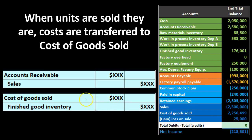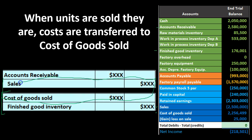When a sale is made, we increase accounts receivable and increase sales revenue. At the same time, finished goods inventory decreases with a credit and Cost of Goods Sold is debited as the expense. Net income goes up by the sales credit and back down by the cost of goods sold, reflecting the profit margin — selling price minus the cost to produce the goods.